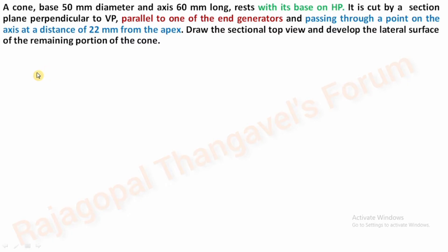Problem: A cone with base 50 mm diameter, axis 60 mm long, rests with its base on HP. It is cut by a section plane perpendicular to VP, parallel to one of the end generators, and passing through a point on the axis at a distance of 22 mm from the apex. Draw the sectional top view and develop the lateral surface of the remaining portion of the cone.